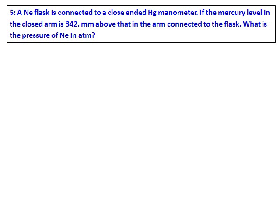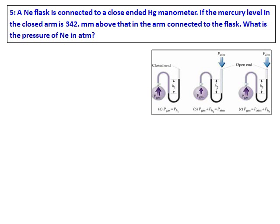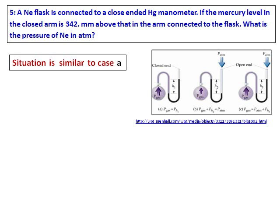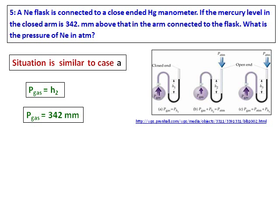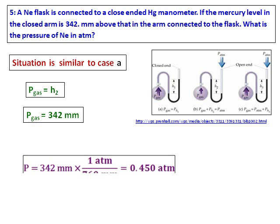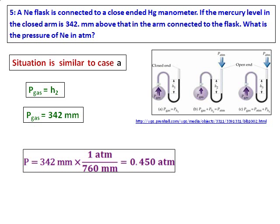Question: a neon flask is connected to a closed-ended mercury manometer. The mercury level in the closed arm is 342 mm above that in the arm connected to the flask — what is the pressure of neon in atmosphere? Since it is a closed-end manometer, pressure of the gas equals the height. There is no atmospheric pressure term, so the pressure of the gas is 342 mm, converted to atmosphere using 1 ATM equals 760 mm.